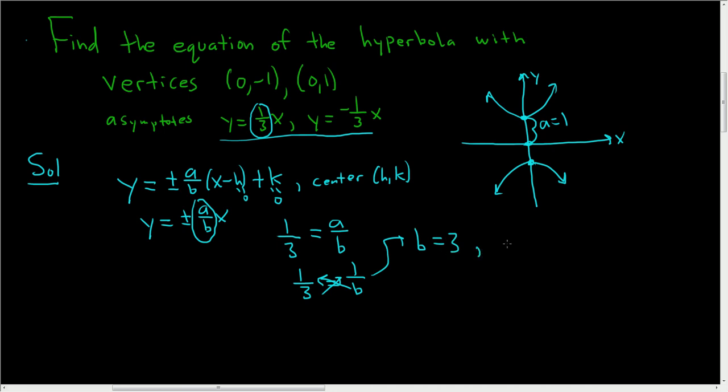So we have a. a was 1 from the picture. And we have b. And we have the center. In this case, the center is (0,0).